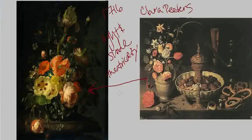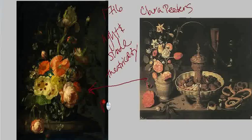Rachel Ruysch is a transitional figure, and now that we're into the 18th century, she's kind of foreshadowing styles that will come. She's foreshadowing the Rococo, as I mentioned, and we'll talk a lot more about that in a couple of units.